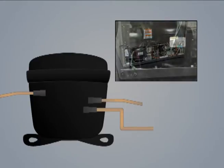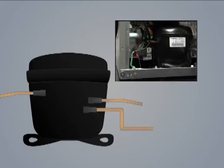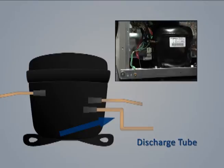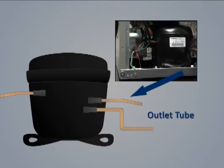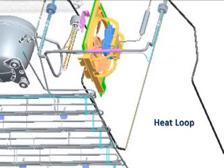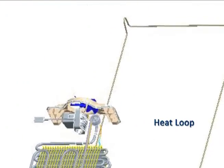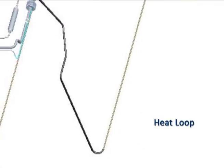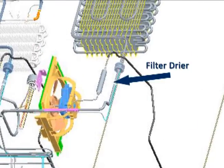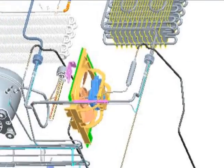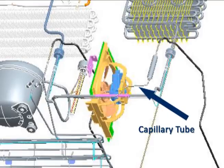Connecting the components. The compressor is the heart of the refrigeration system. The compressor consists of a reciprocal piston pump driven by a permanent split capacitor motor encased in a metal case. The discharge tube connects the compressor to the inlet of the condenser. The outlet of the condenser is connected to the inlet of the heat loop, also called the Yoder line. The heat loop tube is routed around the perimeter of the refrigerator cabinet door matting flange. The outlet of the heat loop is connected to the inlet of the filter dryer, which is designed to filter out debris and remove any moisture. The outlet of the dryer is a capillary tube, also called cap tube.